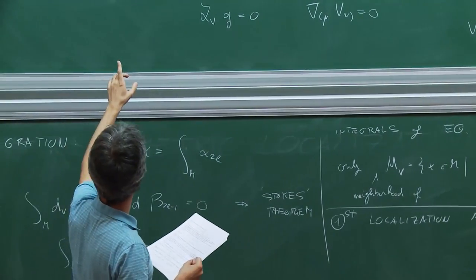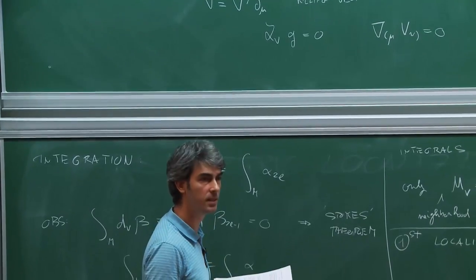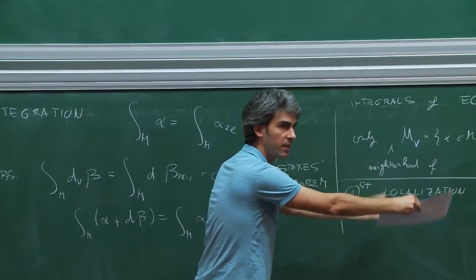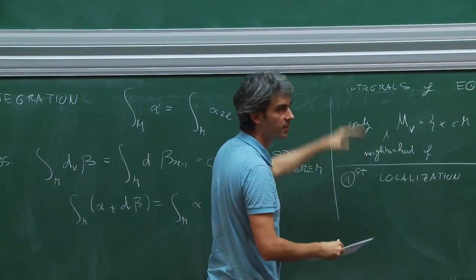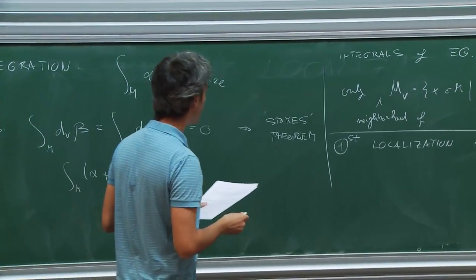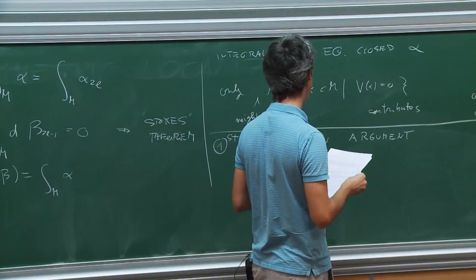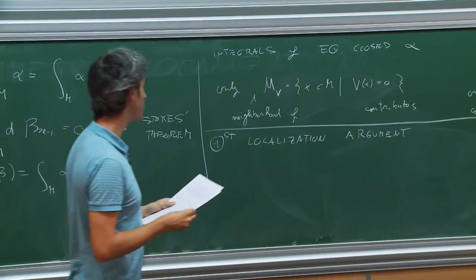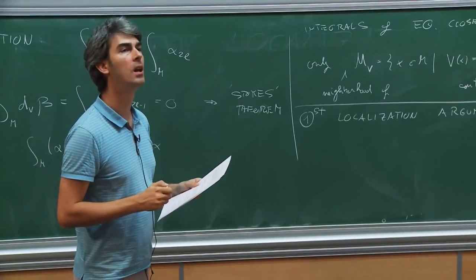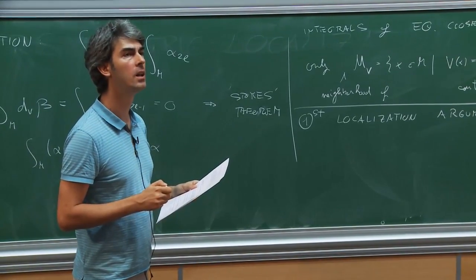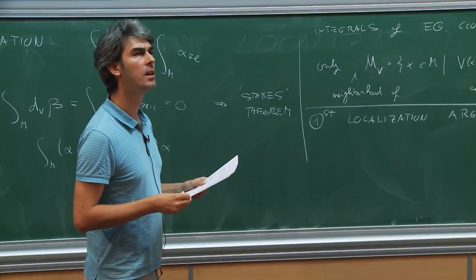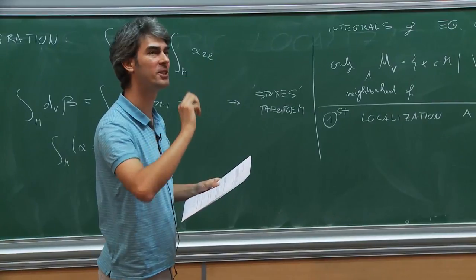How do we see this? We construct a one-form eta which is dual to the vector field — at this point we do need the metric. This one-form is defined by lowering the index with the metric: eta = V^mu g_{mu nu} dx^nu. The properties of this form: first, it is equivariant in the sense that its Lie derivative along V vanishes. This follows because when the Lie derivative acts on V you get the commutator of V with itself which is zero, and when it acts on g, we use that V is a Killing vector.